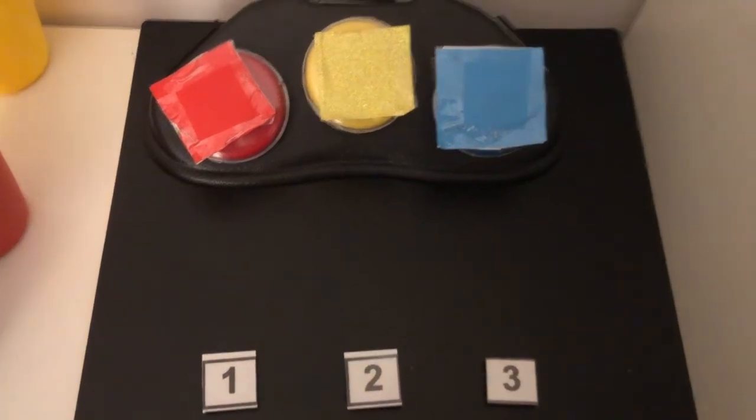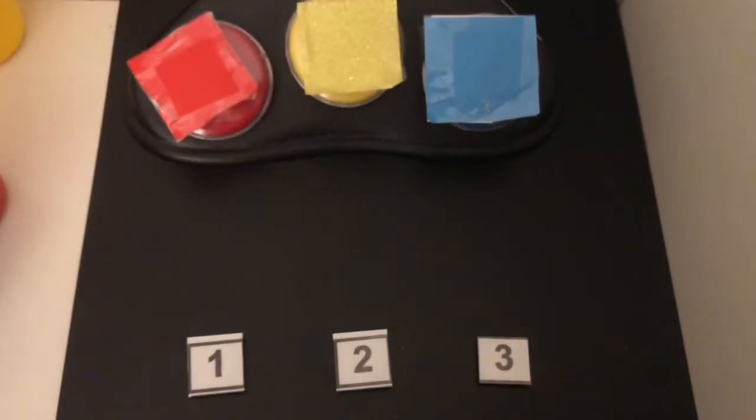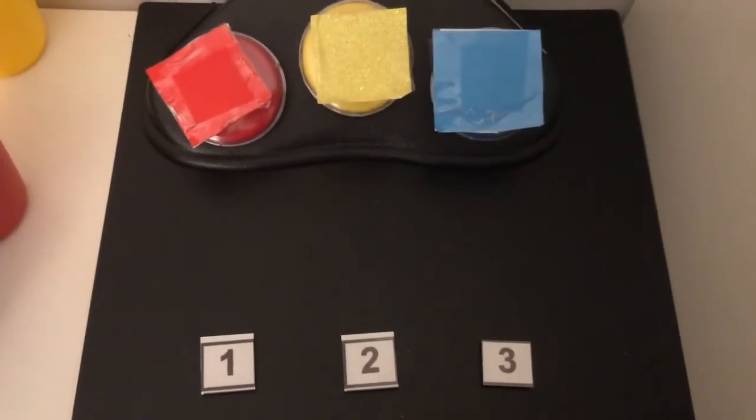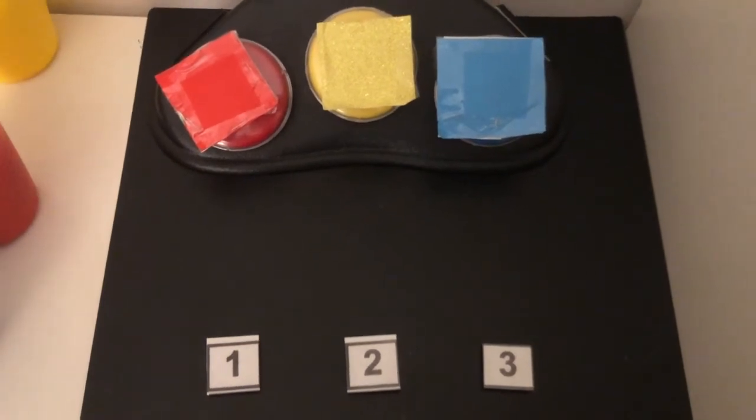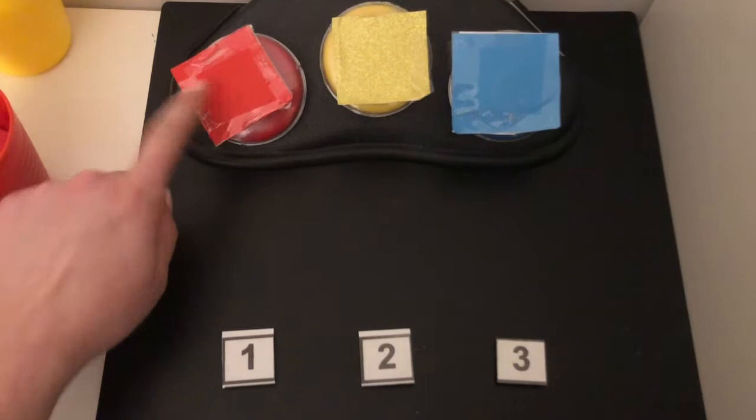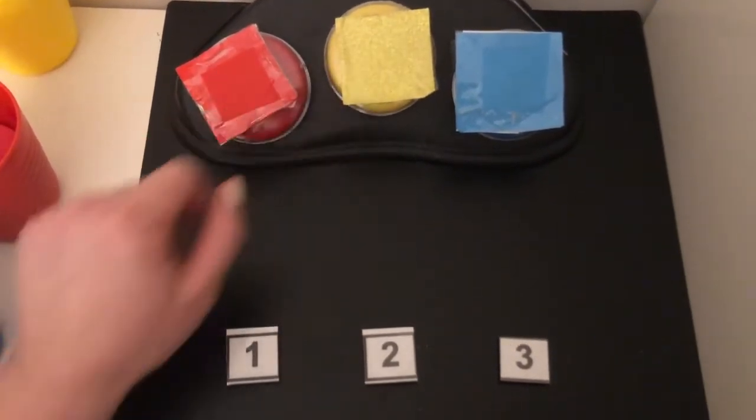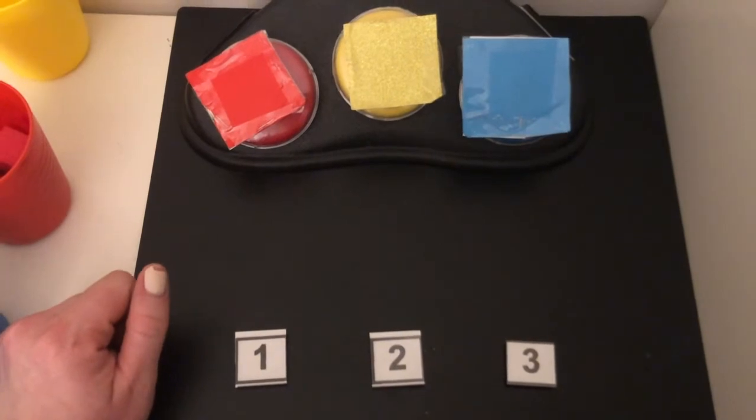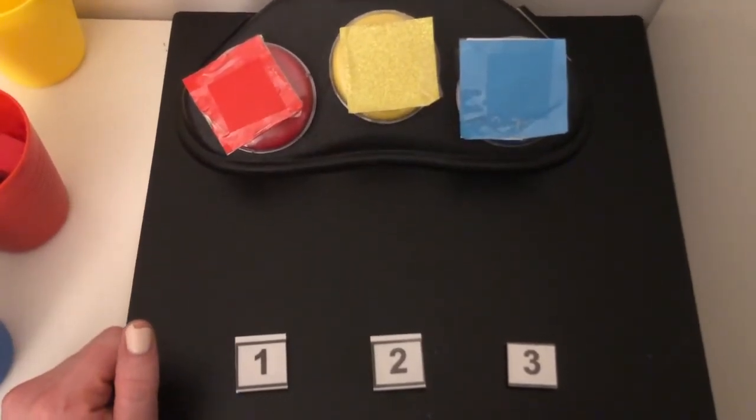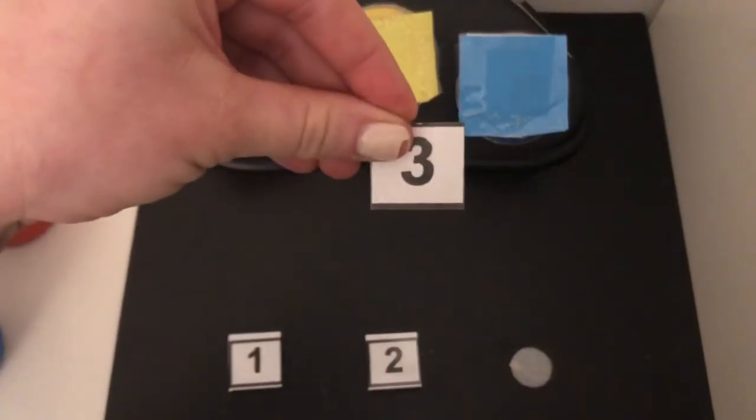Hi everybody, it's Miss Avery and today we are going to practice counting one, two, three with our three primary colors. Our primary colors are red, yellow, and blue. That's right, we have three primary colors.